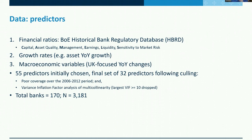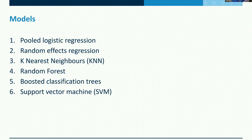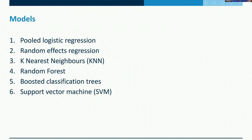We compared six different models. The first two are classic statistical linear models: pooled logistic regression and random effects regression, which accounts for the clustering structure in the data. Then four that fall under the machine learning umbrella: k-nearest neighbors, random forest, boosted classification tree — both ensembles of classification trees — and a support vector machine.